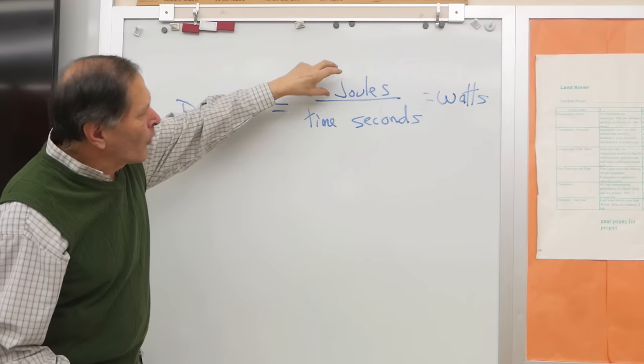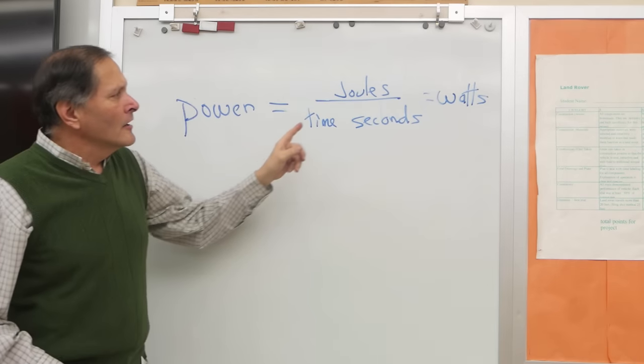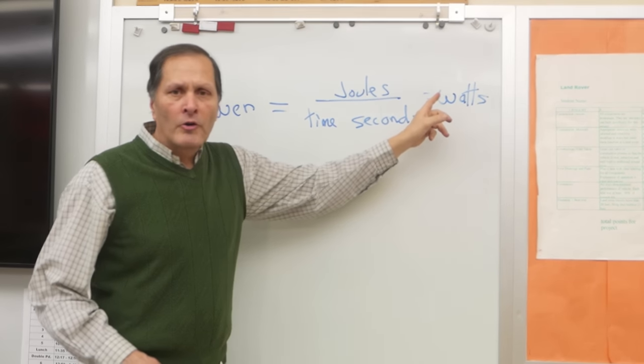The next task is to calculate the power. And that's simply going to take the amount of work that's done and divide it by the amount of time it took to accomplish it. And when we do that, that's then going to give us the power in watts.